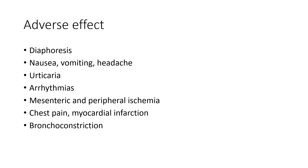The adverse effects of vasopressin include diaphoresis, nausea, vomiting, headache, urticaria, arrhythmias, mesenteric and peripheral ischemia, chest pain, myocardial infarction, and bronchoconstriction. Because of these adverse effects, while the patient is on a prolonged vasopressin infusion, we must monitor for signs of peripheral ischemia such as gangrene. It is always better to administer the infusion via a central line, as peripheral line administration carries a high risk of developing peripheral ischemia.